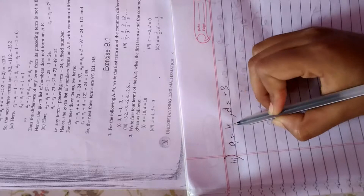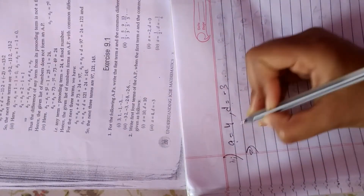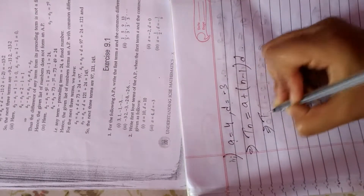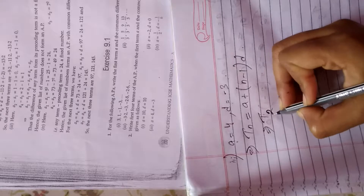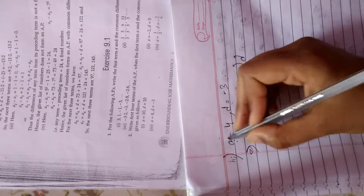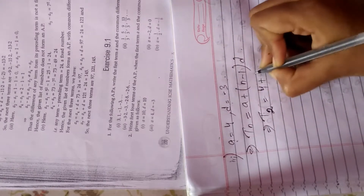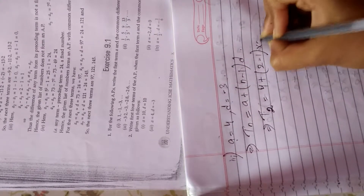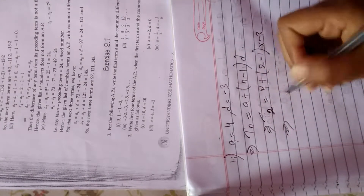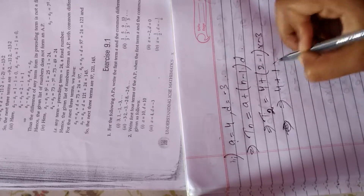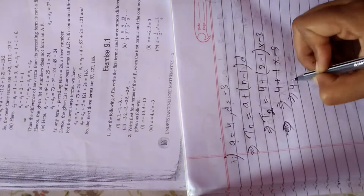Number 3: a is 4 and d is minus 3. The formula for nth term is a plus (n minus 1) into d. T1 is already given as 4. T2 = 4 plus (2 minus 1) into (-3) = 4 plus 1 into (-3) = 4 minus 3.